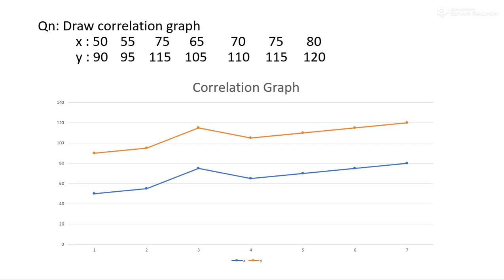Let us try to solve a question. Here, the two variables are x and y, and the individual values of x and y are given. First, we plot the individual values of x and draw the curve. The blue colored curve denotes the variable x.